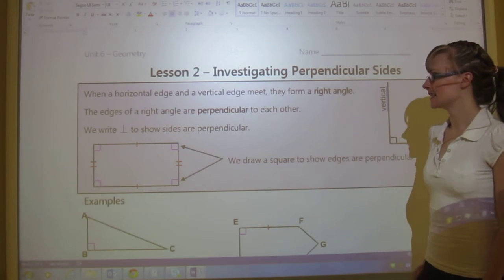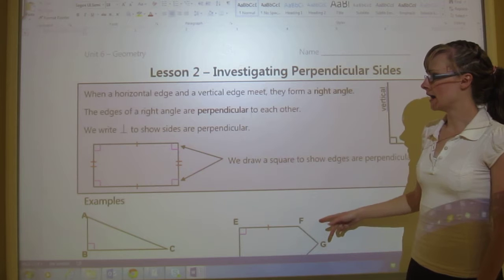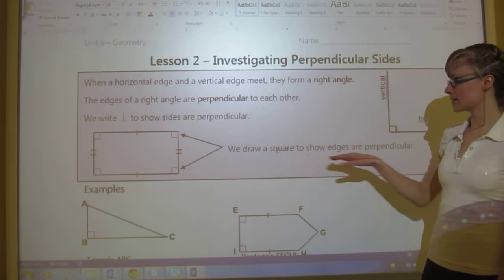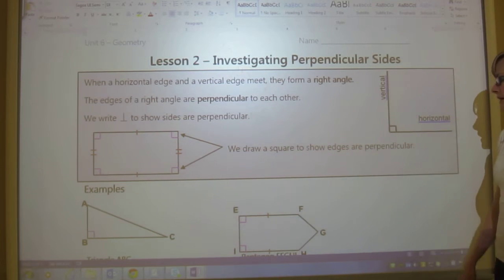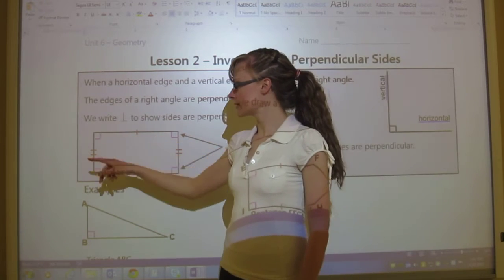So as you can see there, they're perpendicular. There are four perpendicular corners. And that's what this is showing. We draw a square to show edges are perpendicular. So every time it's perpendicular, we draw a square.